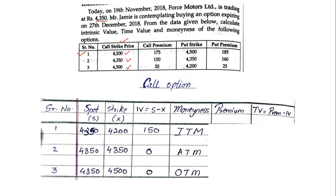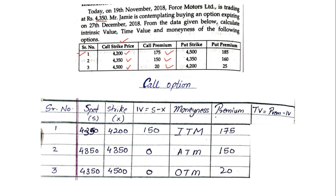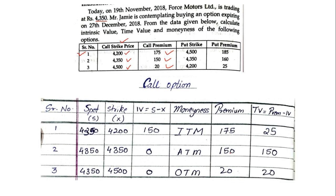Next is premium — it's already given in the question as 175, 150, and 20, so we take it as it is. Last is time value. The time value formula is premium minus intrinsic value. So: 175 minus 150 equals 25; 150 minus 0 equals 150; and 20 minus 0 equals 20. This is how you'll solve the first part of the sum based on call option.